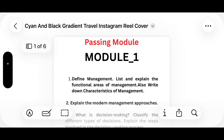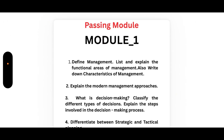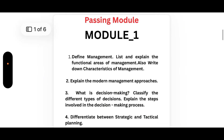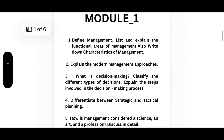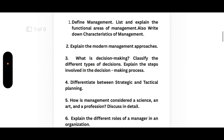The first important question is: Define management, list and explain the functional areas of management, and also write down the characteristics of management. This may be a 10-marks question. Next, explain the modern management approaches. Third, what is decision making? Classify the different types of decisions and explain the steps involved in the decision-making process.